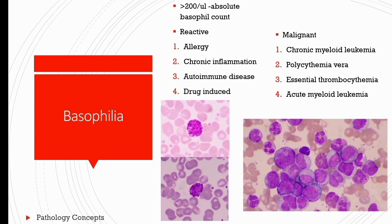Basophilia: when absolute basophil count is more than 200 per microliter, it is called basophilia. The reactive causes of basophilia are allergic conditions, chronic inflammation, autoimmune disease, and drug-induced causes. Malignant causes are CML, polycythemia vera, AML, and essential thrombocythemia. Splenomegaly is seen with basophilia, which may indicate myeloproliferative neoplasm.